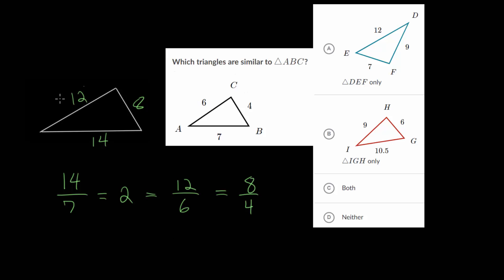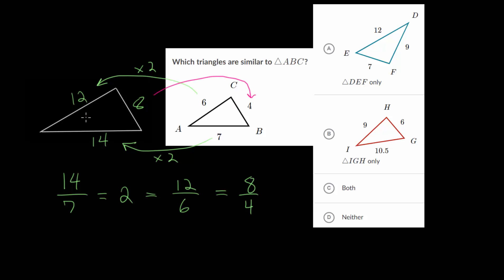We can also go in reverse — looking at the larger triangle and comparing it to the smaller triangle. Again we're comparing corresponding sides, and we can see that we are dividing by the same number each time. Going from 8 to 4 we're dividing by 2, and going from 14 to 7 we are also dividing by 2.